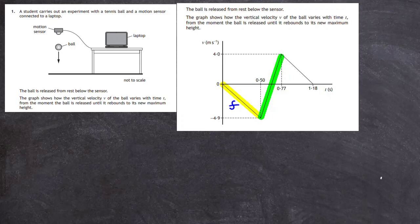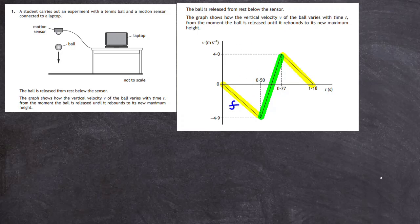At 0.77 seconds — only 0.27 seconds later — the velocity of the ball is 4 m/s upwards. So over that very short period of time the velocity changed direction, and that's what we mean by a bounce. The last part of the graph is the ball rising from the floor to its maximum height, where its velocity returns to 0. So we have: the ball falling, then the bounce, then the ball rising to its maximum height — these are the three sections of the graph.